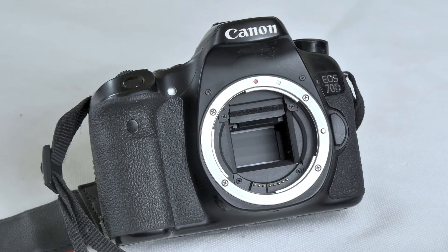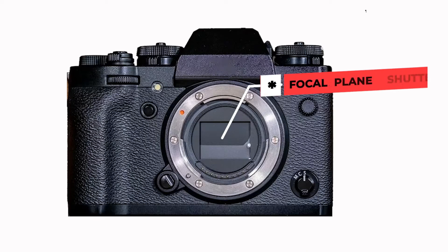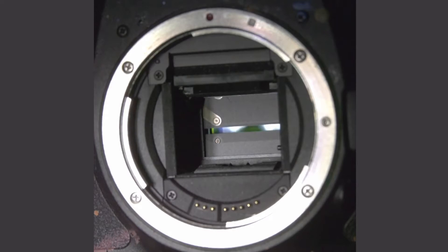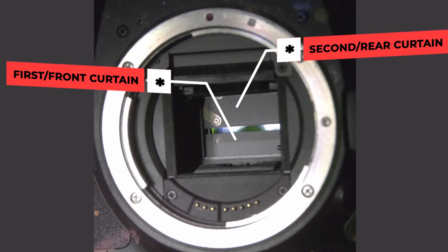To understand high speed sync, we need to go back to some basics of how the camera shutter works. The shutter consists of two barriers that open up to allow light to hit your sensor. Most cameras use what is called a focal plane shutter, consisting of two barriers that close the sensor off. When you press the shutter, they open, allow light to hit the sensor, and then close again. The barriers are called curtains — the first curtain and the second curtain, also called the front curtain and the rear curtain.